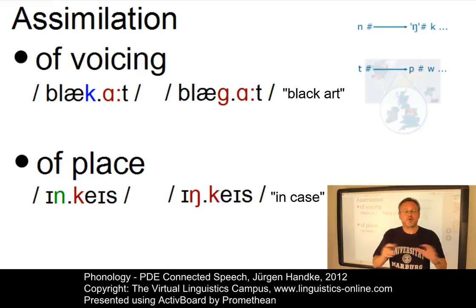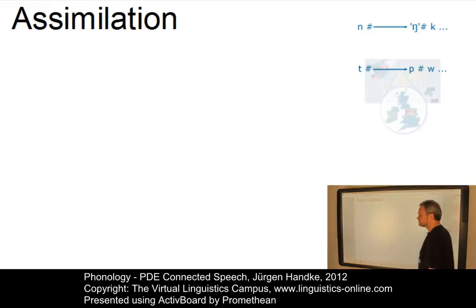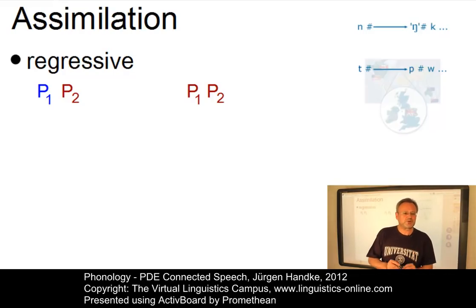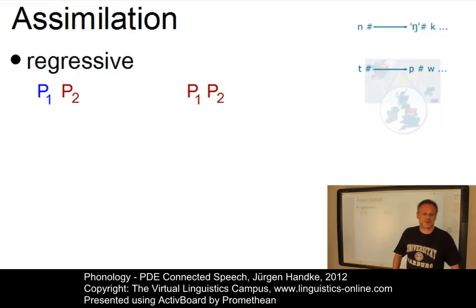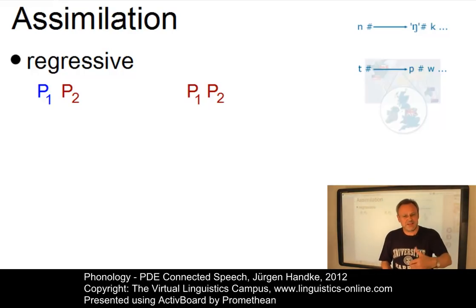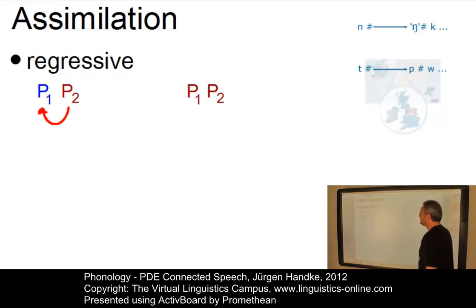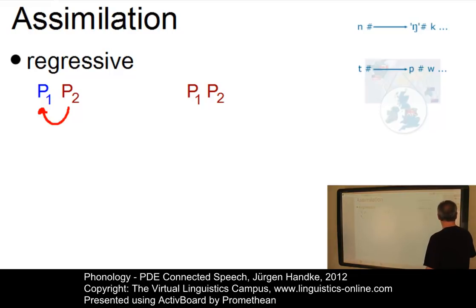On the basis of the direction of the phonemic influence, the following kinds of assimilation are normally defined. Let us start with regressive assimilation. Regressive assimilation is always optional in present-day English and often found in rapid conversation. It occurs when a word-final consonant, mostly an alveolar consonant — marked as P1 or phoneme 1 — assimilates to the first consonant of the next word. So the influence is in a regressive direction: phoneme 2 influences phoneme 1, so that they become identical in terms of their place of articulation.